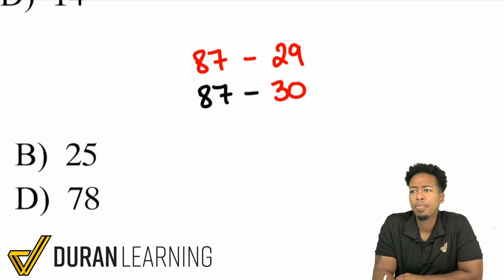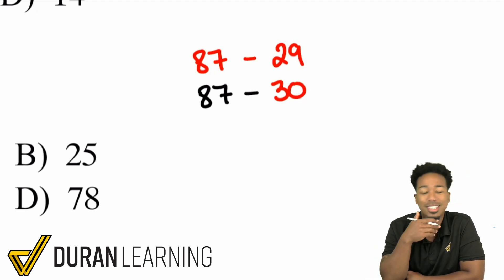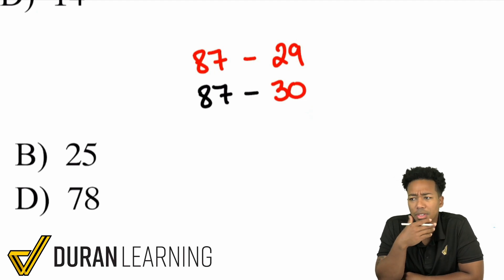But think of it like this. If I take away 30 because 29 is really close to 30 and the reason I chose 30 is because there's that zero right there. Makes it super easy to deal with. Now if I take away 30 instead of 29 I took away one too many right.